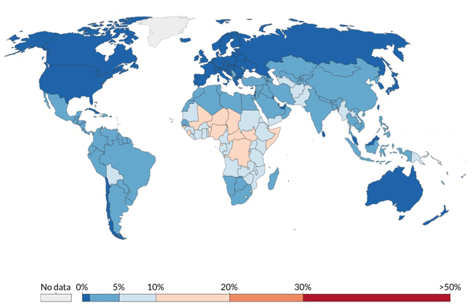Agencies promoting and implementing child survival activities worldwide include UNICEF and non-governmental organizations. Major child survival donors worldwide include the World Bank, the British government's Department for International Development, the Canadian International Development Agency, and the United States Agency for International Development. In the United States, most non-governmental child survival agencies belong to the Core Group, a coalition working through collaborative action to save the lives of young children in the world's poorest countries.